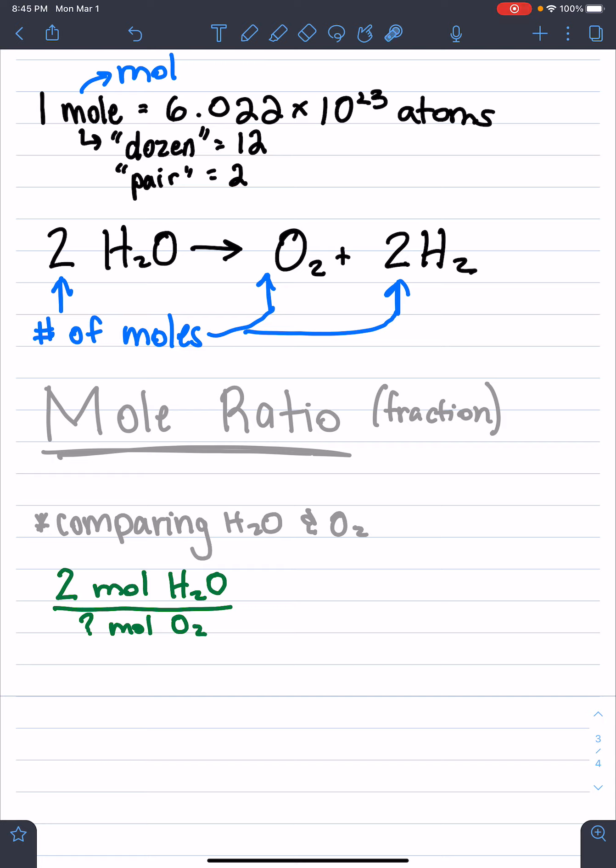So think through it in your head for a second. You'll notice when we have two moles of H2O, we want to know how many moles of O2 we have. When we have two moles of H2O, we are going to be having one mole of O2.